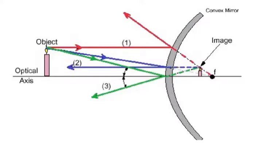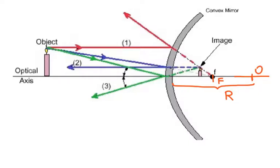To go over the rays one more time: the red one, number one, goes parallel then through the focal point. The focal point of the mirror is one half of the radius of curvature. So the radius would be this much, center point O, and this is the focal point. The blue one goes toward the focal point and as soon as it hits the mirror goes parallel. The green one goes to the center point connection with the mirror, and the incident ray angle equals the reflected ray angle.